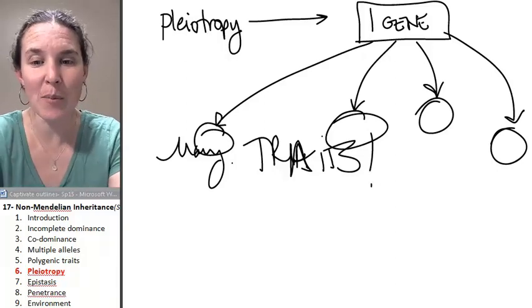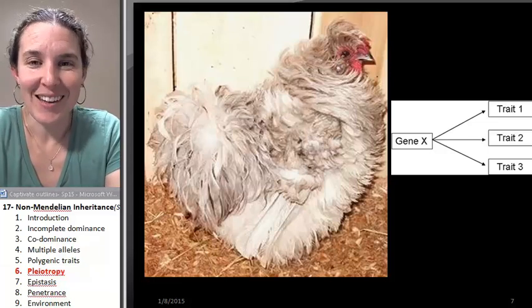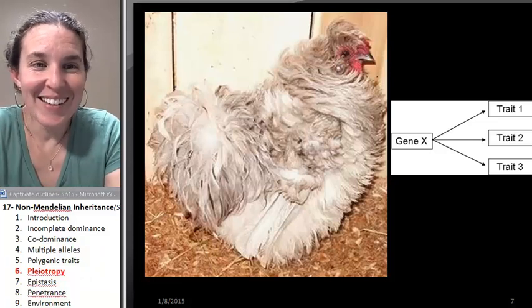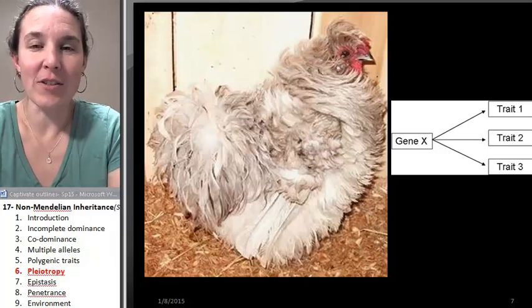The other example, if you love me, you'll get me this chicken. This is a frizzled chicken. What? Dude, I need a frizzled chicken. I mean it. I really want a frizzled chicken.